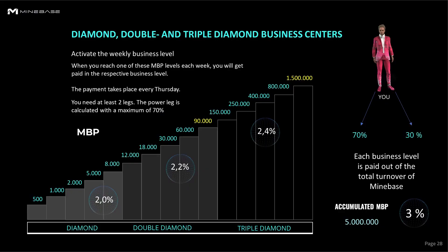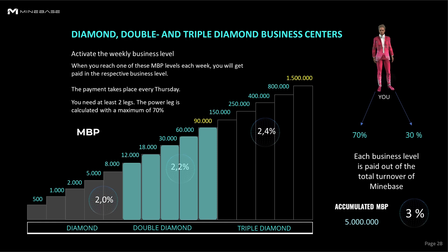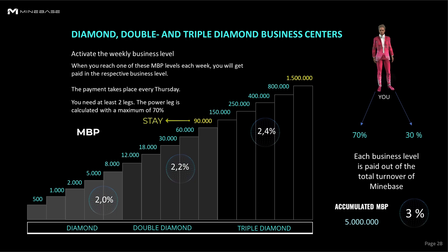In the Diamond level, you will receive 2% of the total revenue from each level, shared with other people who are in the same level. In the Double Diamond business center it is the same, but you get 2.2%. From 90,000 MBPs, you stay in this business level, which means you cannot go lower.